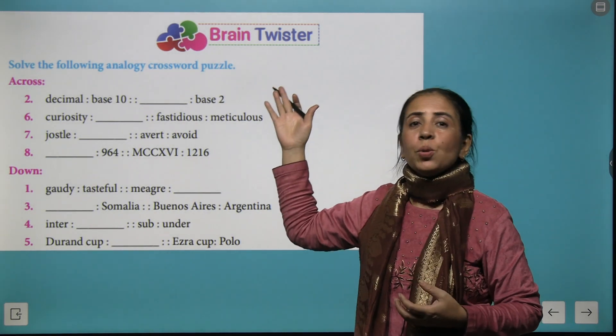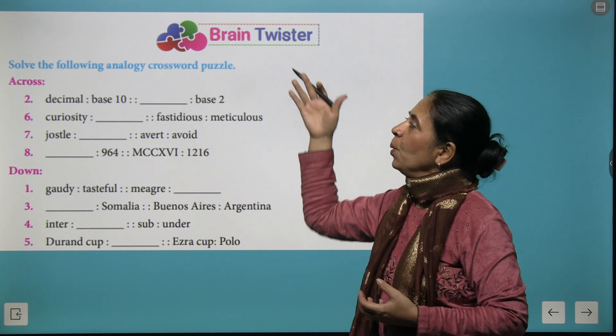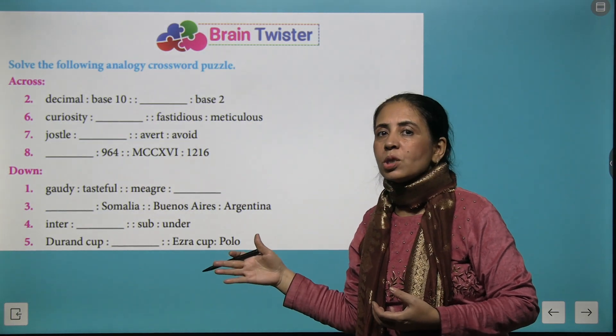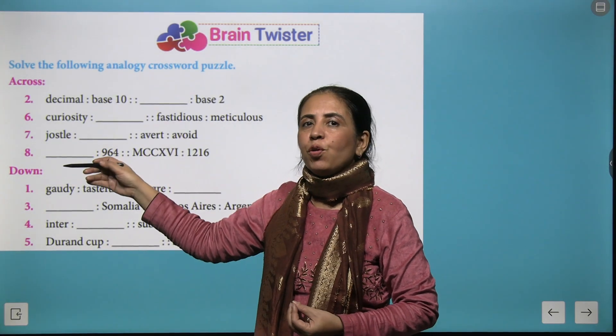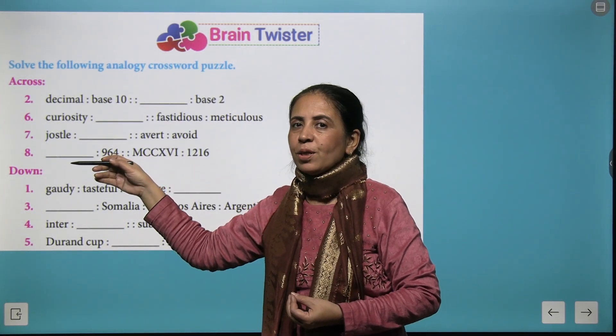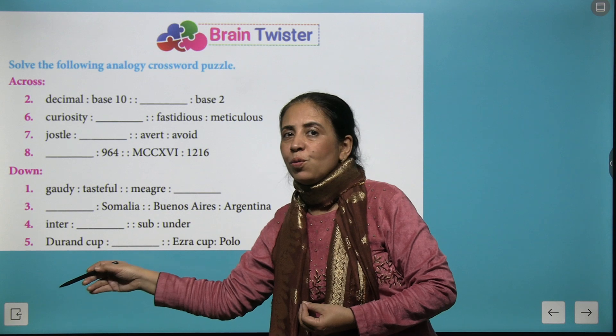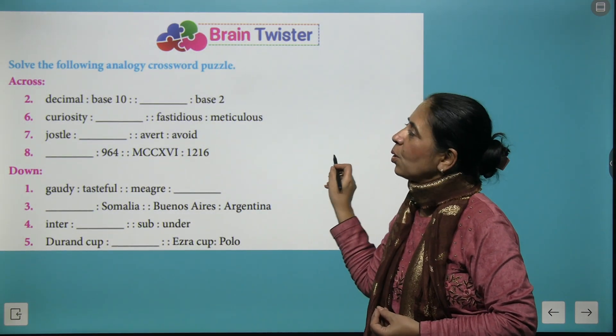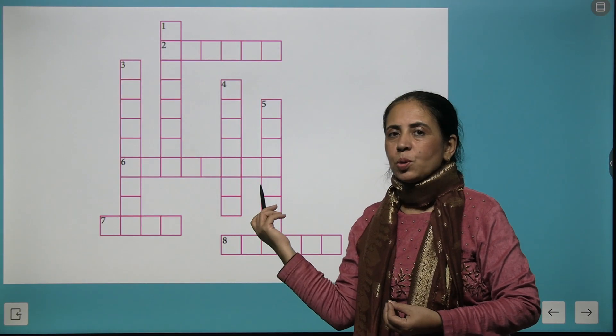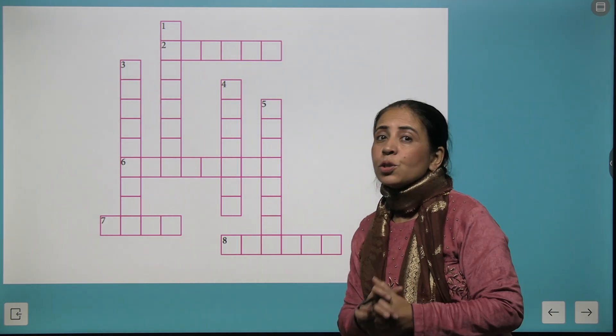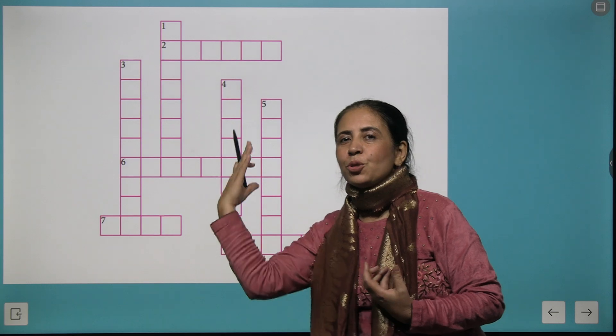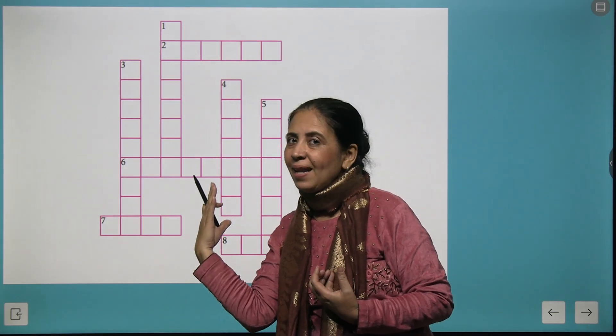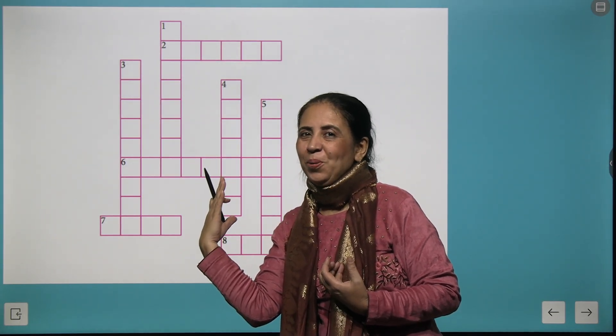And then coming to a brain twister we have a crossword puzzle. In this crossword puzzle we have few clues for across the crossword and few clues for downward crossword and your crossword will be completed. So just make a small effort and rise to the top of your success ladder. My best wishes to you.